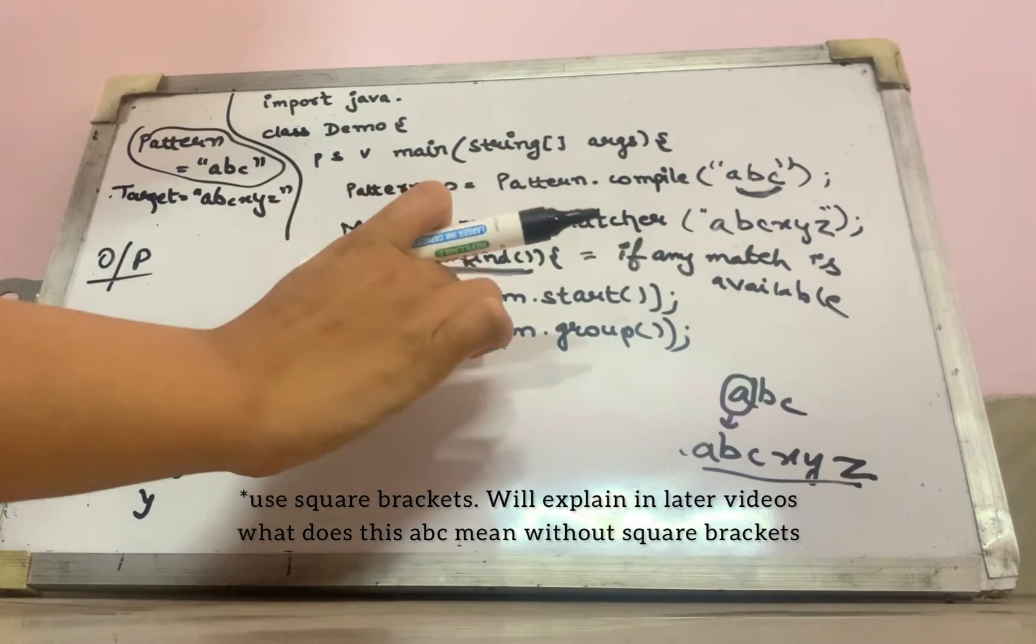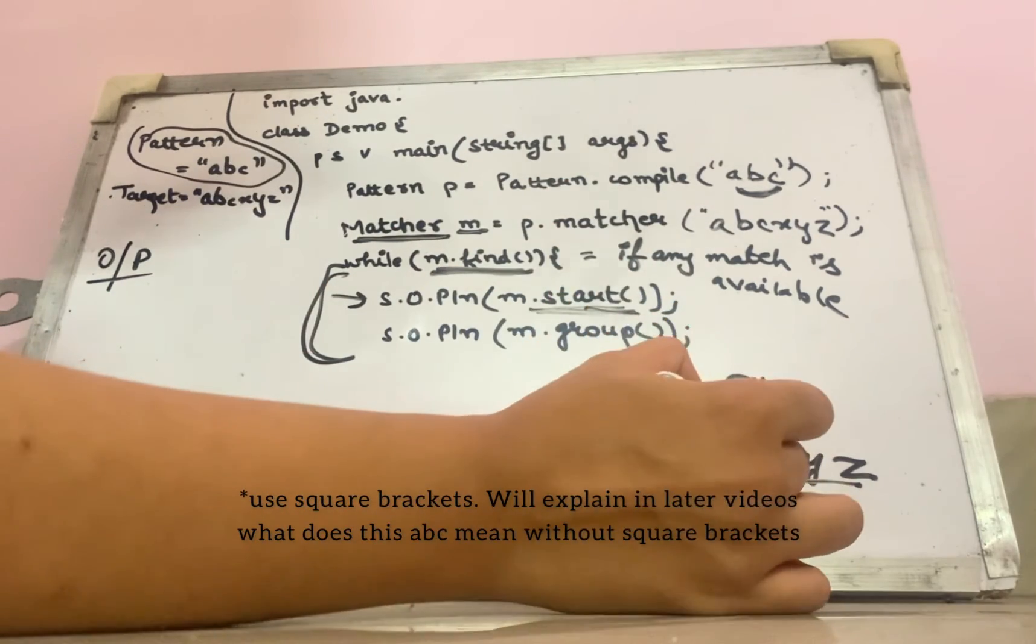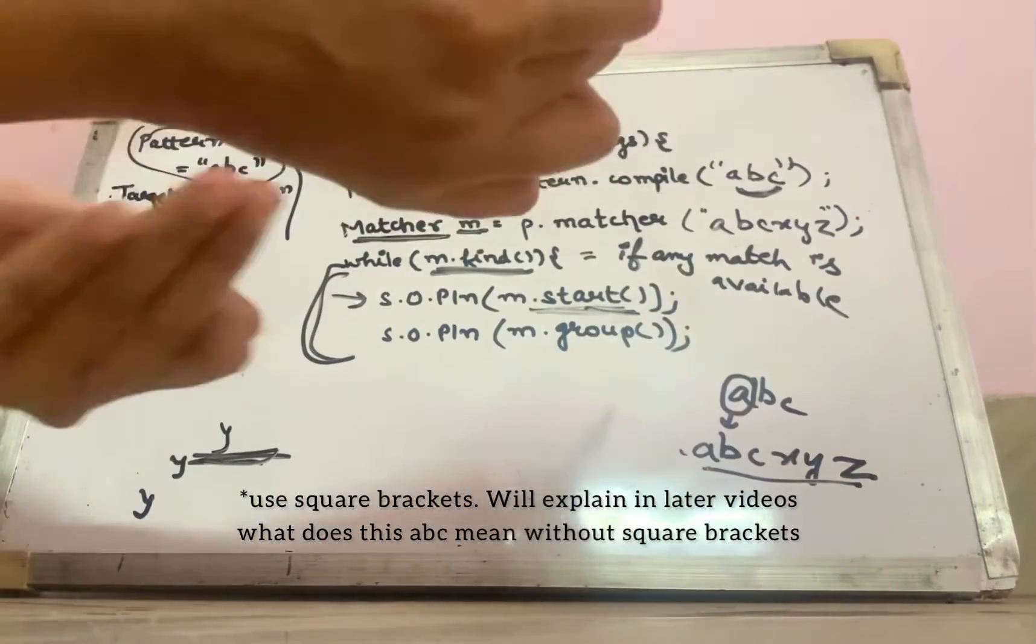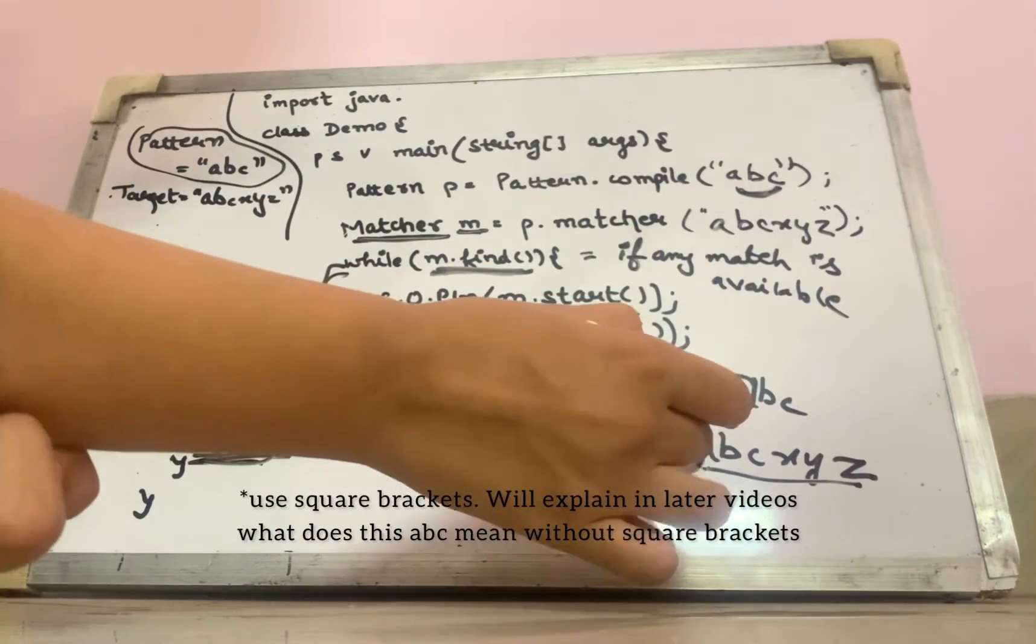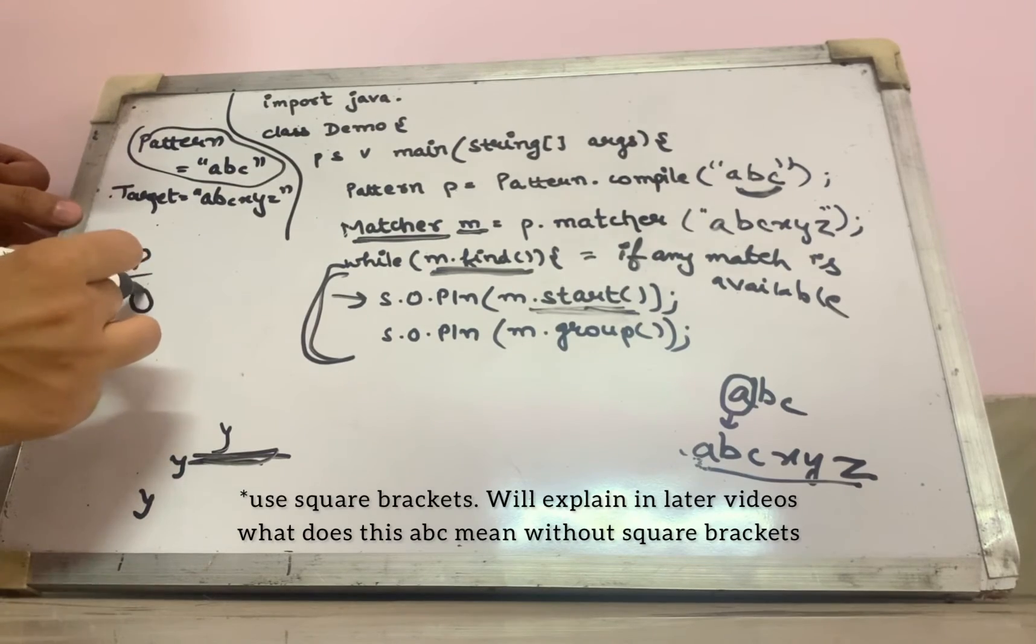System dot out dot println and m dot start. What does this start do? It is going to give me the starting index of the pattern which is found in the target string. So it is found in the target at 0th position.